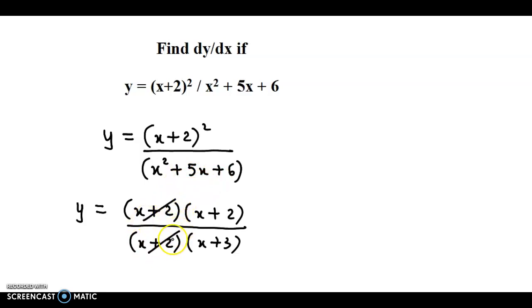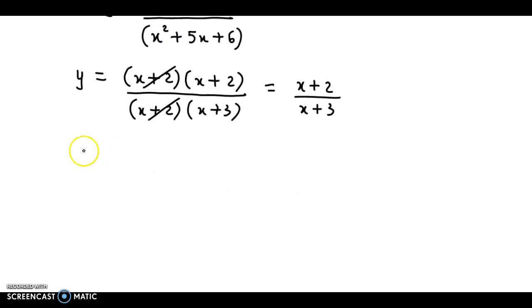Now (x+2) cancels with (x+2). So finally we have y = (x+2)/(x+3). And now we can differentiate with respect to x. So differentiating with respect to x, we can easily obtain dy/dx.